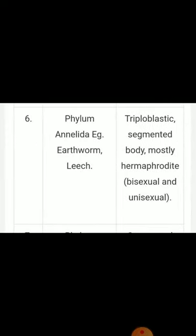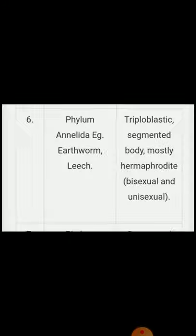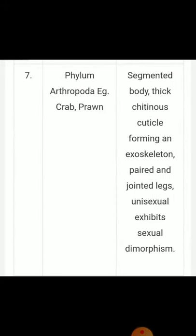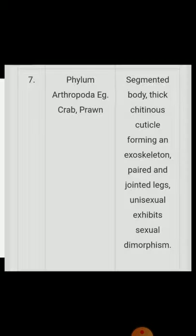Sixth phylum — Annelida: examples: earthworm, leech. Characters: triploblastic, segmented body; mostly hermaphrodite, bisexual and unisexual. Seventh phylum — Arthropoda: examples: crab, prawn. Characters: segmented body with thick chitinous cuticle forming an exoskeleton; paired and jointed limbs; unisexual, exhibits sexual dimorphism.